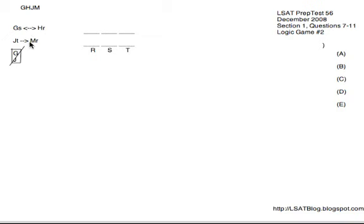Next they tell us that JT requires MR. And finally, G and J never do anything together. So very little in the way of inferences up front for this game. These rules don't really link together much. We'll do more work here over the course of the game itself.